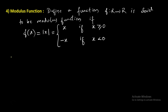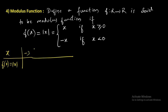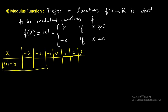Now the graph. Before going to the graph section, let me take a table with x values and f of x values. Say minus 3, minus 2, minus 1, 0, 1, 2, 3. For minus 3 we get 3, minus 2 we get plus 2, minus 1 we get plus 1, 0 gives 0, 1 gives 1, 2 gives 2, 3 gives 3. It will continue like this.